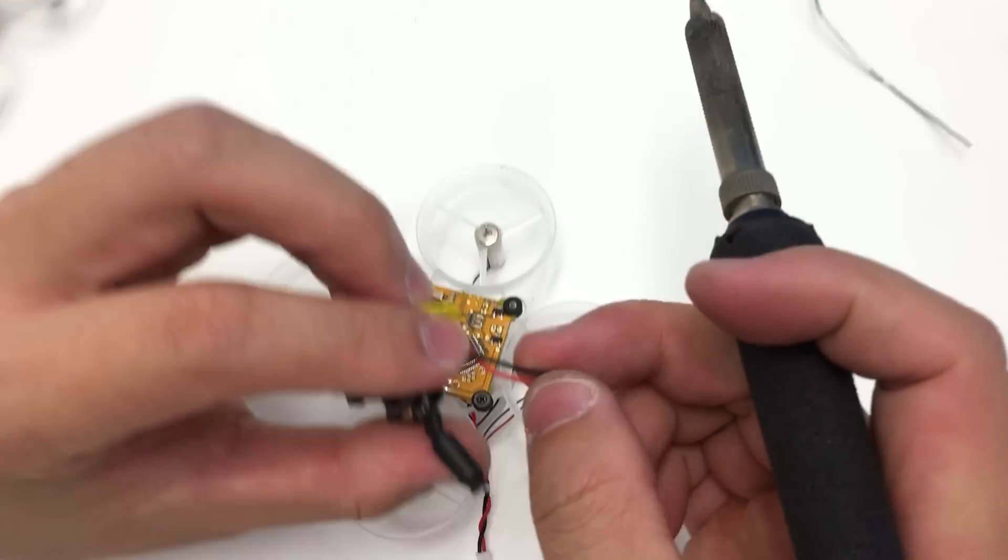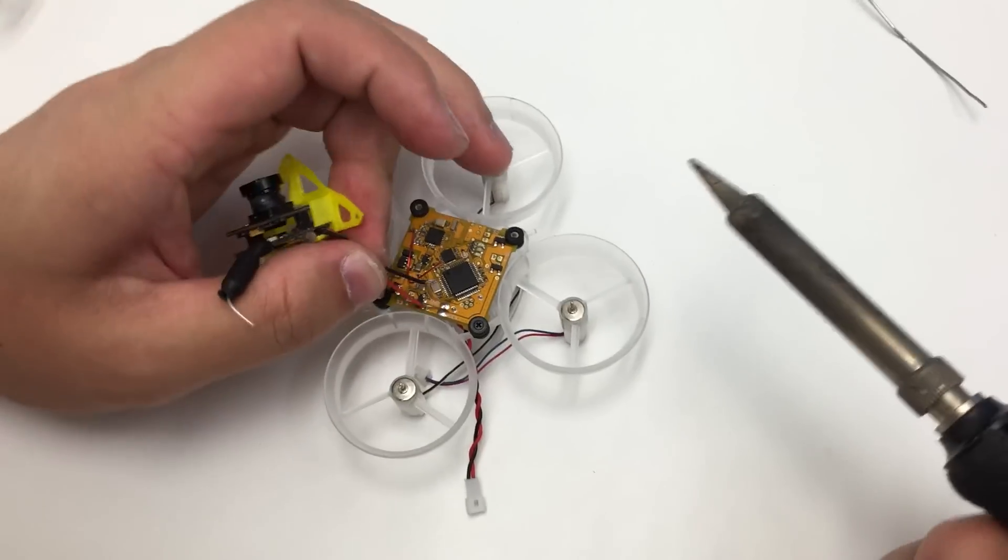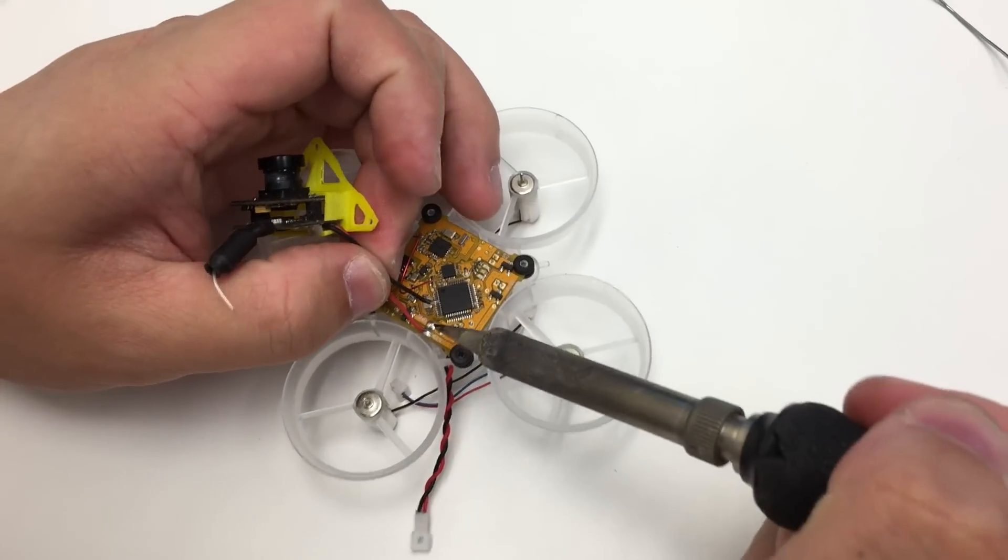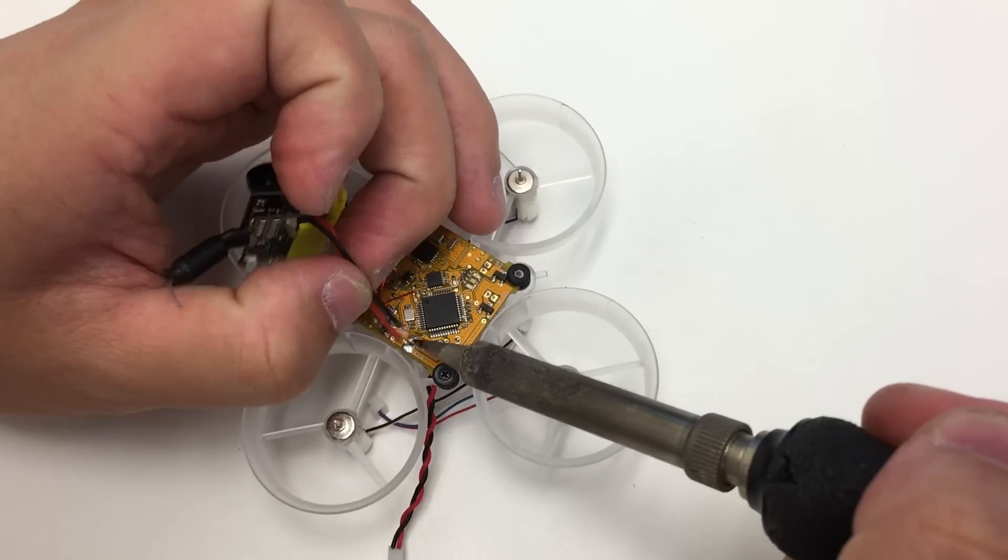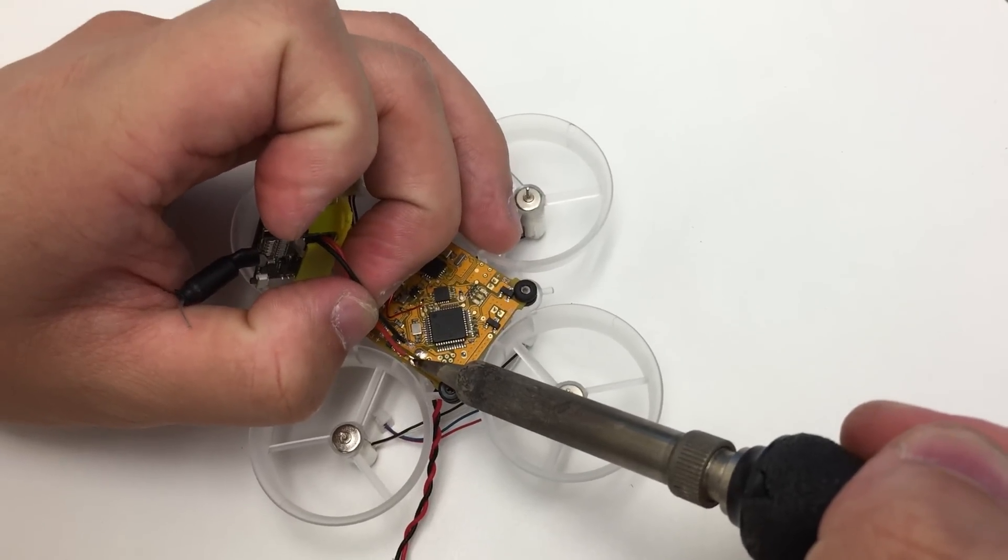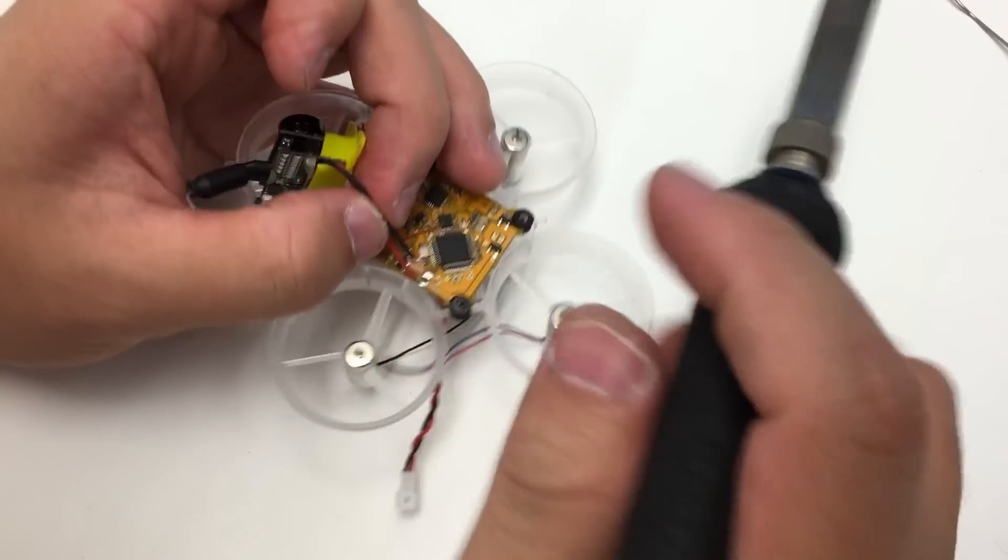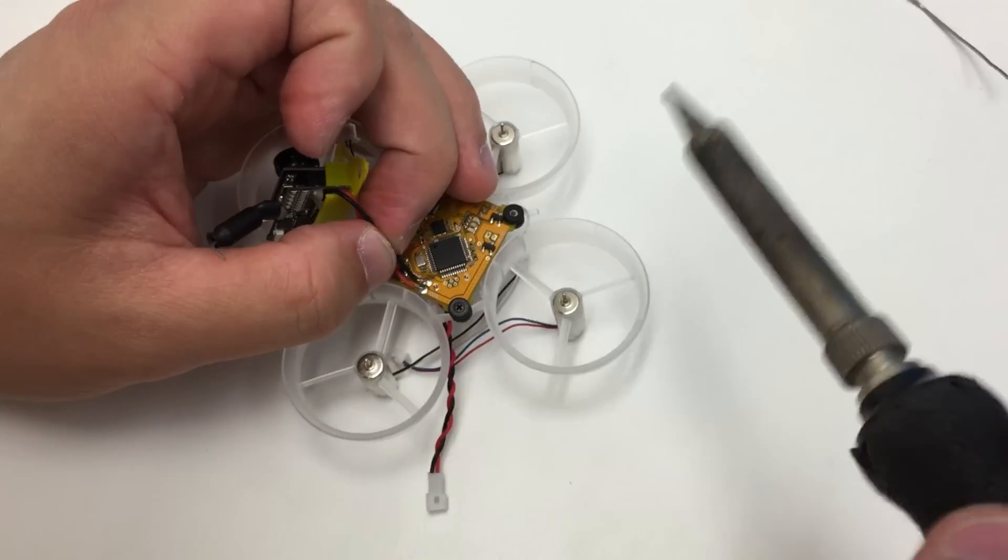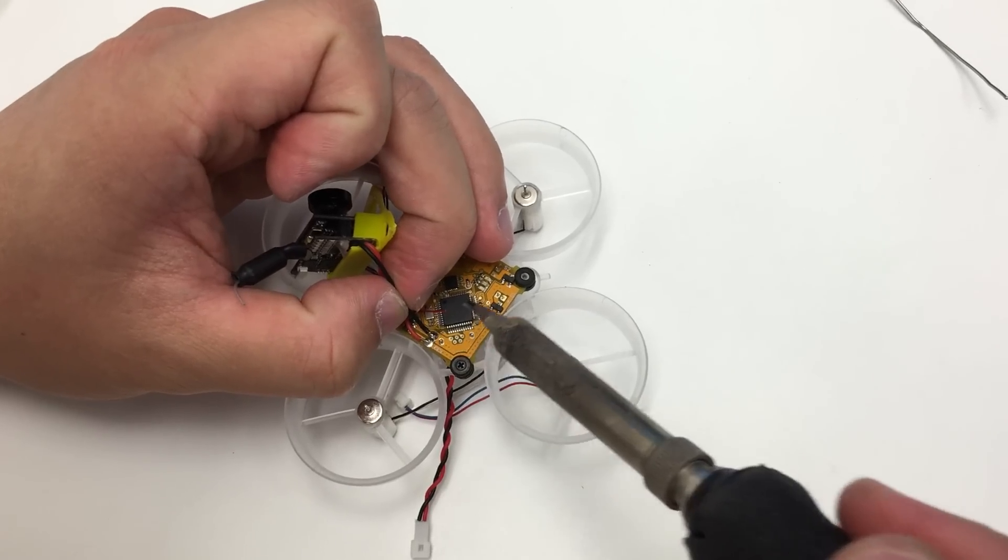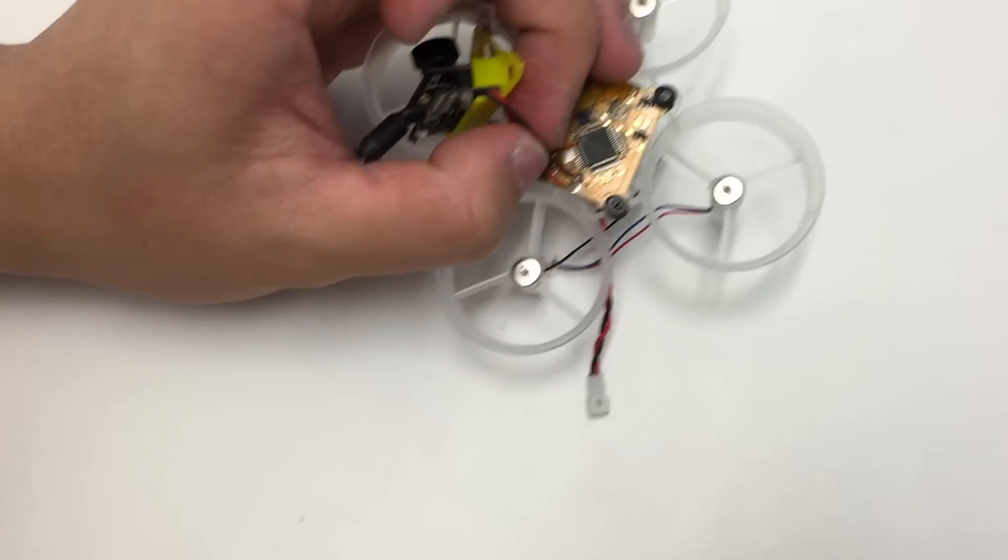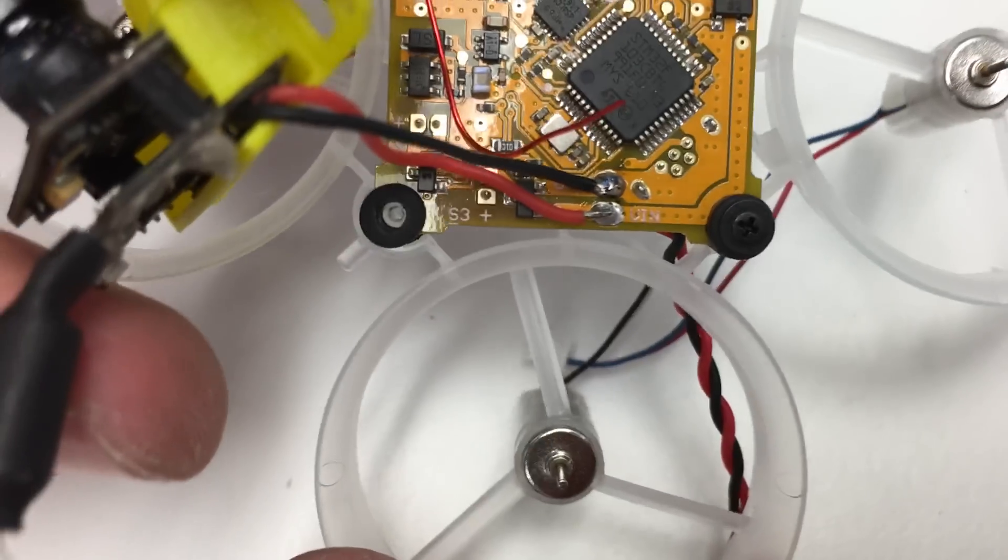Then grab a little solder. The top one is ground and the bottom one is the power. Take your camera, get it prepped and ready. Grab the power wire first and solder it on. Make sure these two pads do not touch as you're soldering, otherwise you'll short out the flight controller and camera. Add the ground one as well.